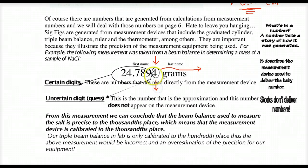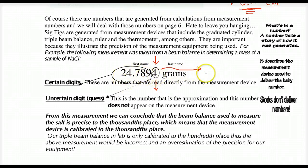The more precise the instrument, the guess is in a smaller part of the overall measurement. So we're looking at the tens, hundreds, thousands, and ten-thousands place. Obviously, this guess is in a tiny fraction of the overall measurement — this is a very precise measurement.